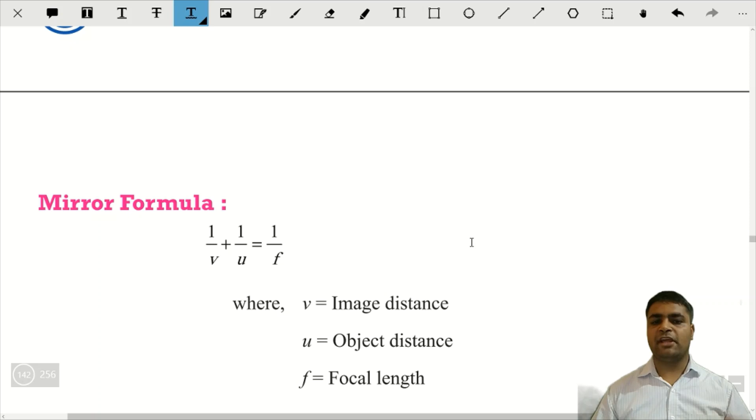Next, humein dekhna hai mirror formula. Toh uus basis par ek mirror formula nikala hai, jis se ki hum value nikaal sakti hai, object distance, image distance, or focal length ki. Toh mirror formula kya hai? 1/v + 1/u = 1/f. v is the image distance, u is the object distance, and f is the focal length.